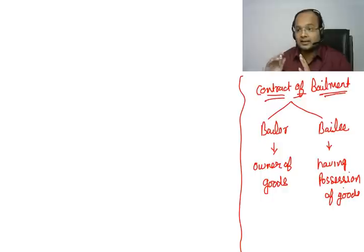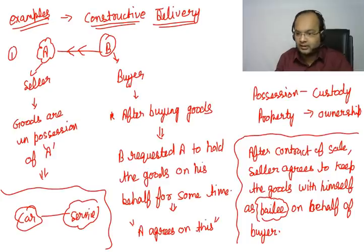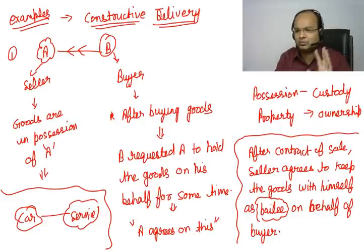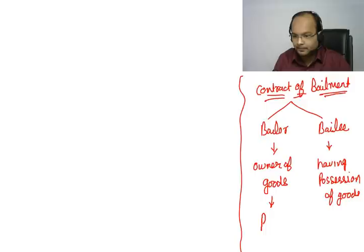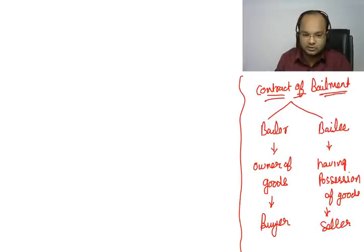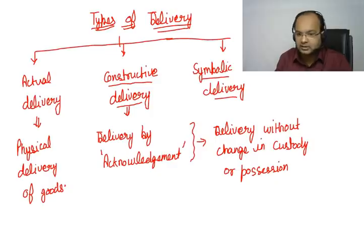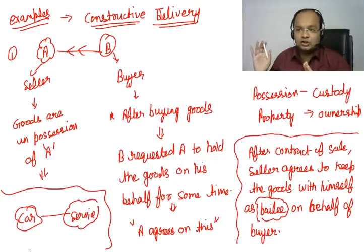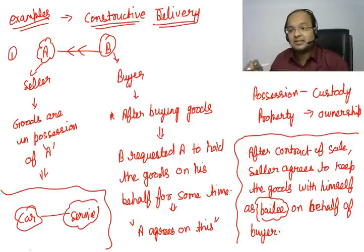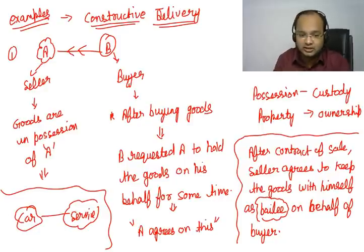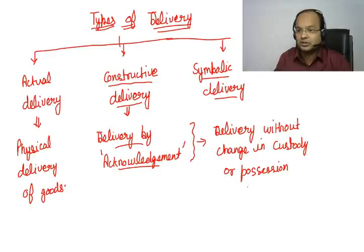So in our contract of sale scenario, B the buyer has purchased goods. After buying, he requests A to keep the goods for now — he will take them when needed. So here, the bailer is the buyer and the bailee is the seller, who is keeping the goods in his custody. After the contract of sale, the seller agrees to keep the goods with himself as bailee on behalf of the buyer. Constructive delivery is delivery by acknowledgement — delivery without change in custody.